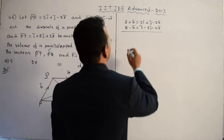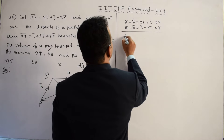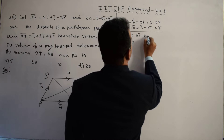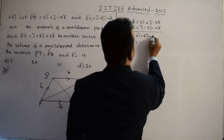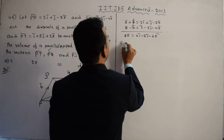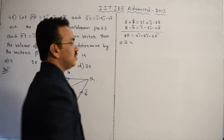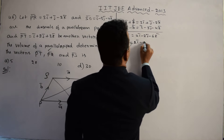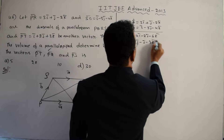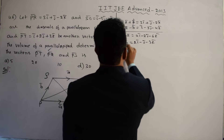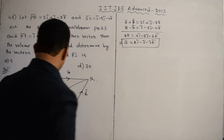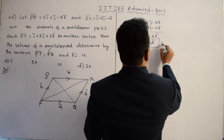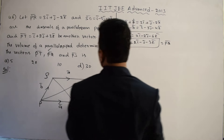Adding the two vector equations, B̄ cancels out, giving 2Ā = 4Ī - 2J̄ - 6K̄. Dividing both sides by 2, we get Ā = 2Ī - J̄ - 3K̄. Since Ā = PQ̄, we have now calculated PQ̄ = 2Ī - J̄ - 3K̄.